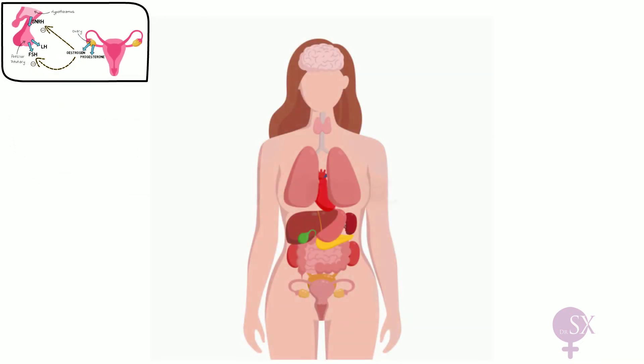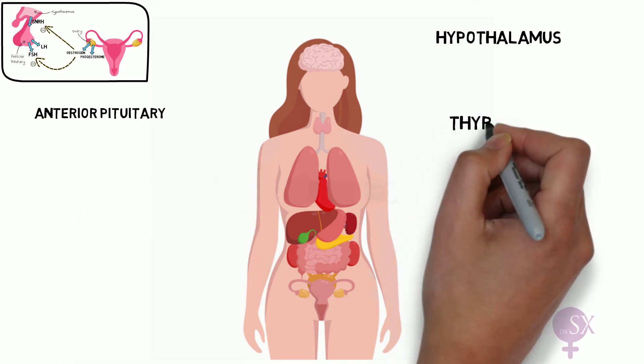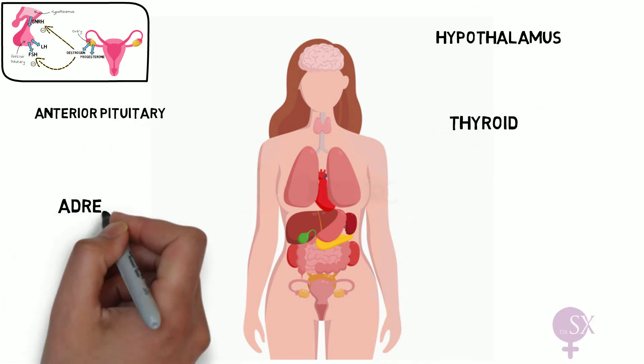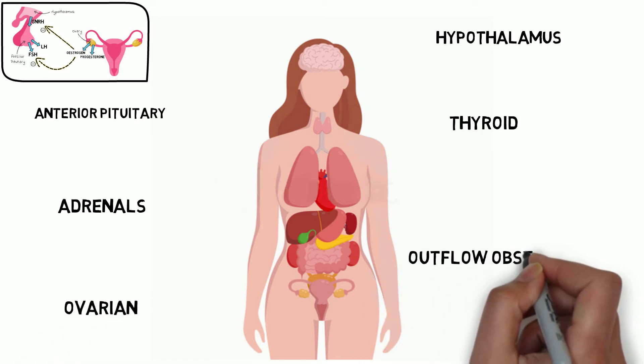So what are the causes of amenorrhea? To make this simpler, we can divide them according to the organs in the body — causes relating to the hypothalamus, the anterior pituitary gland, the thyroid gland, the adrenal glands, the ovaries, and outflow tract or uterine problems.